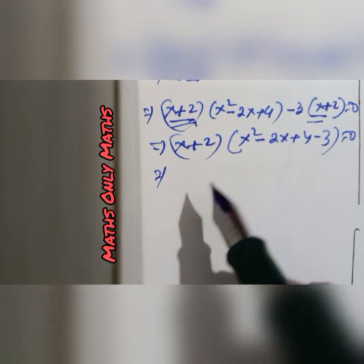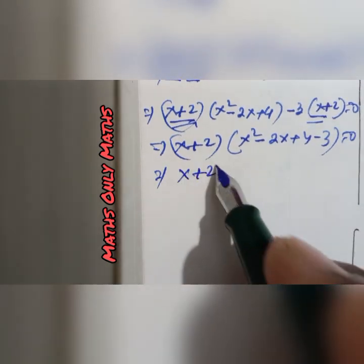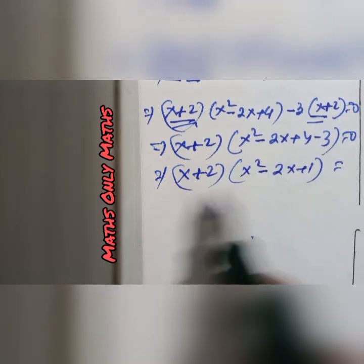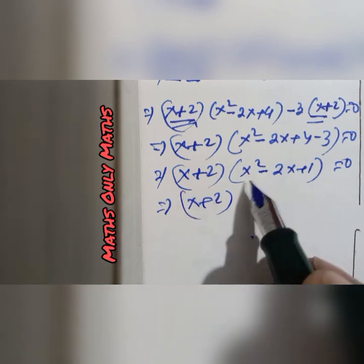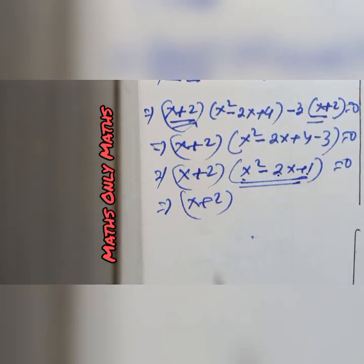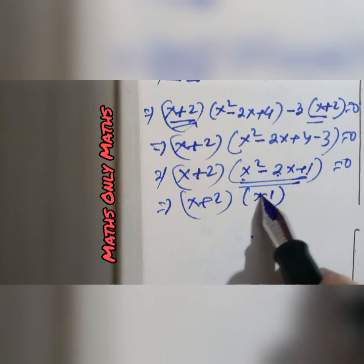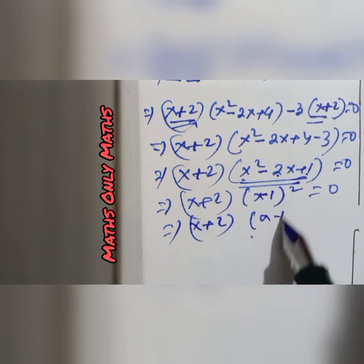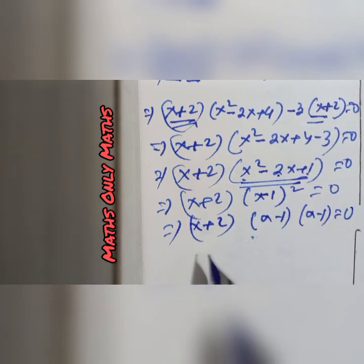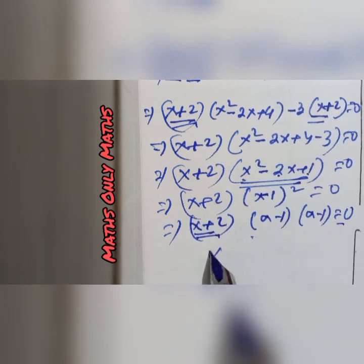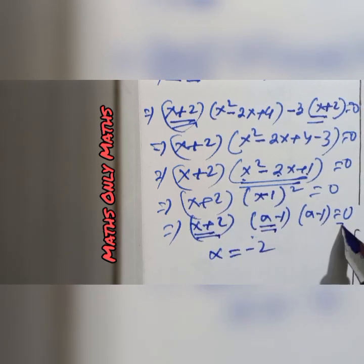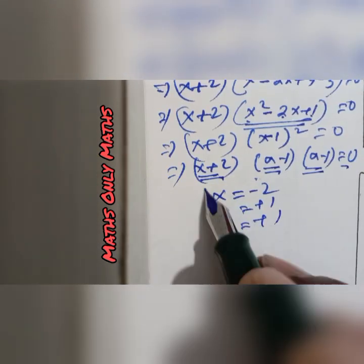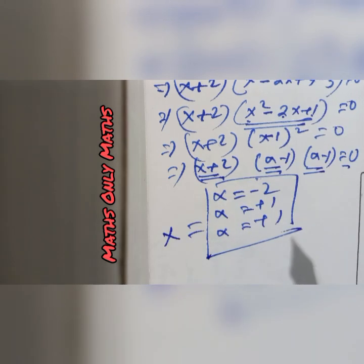So I get x plus 2 multiply x square minus 2x plus 1 equals to 0, which is x plus 2 into x minus 1 whole square equals to 0. So either x plus 2 equals to 0, giving x equals to minus 2, or x minus 1 equals to 0, giving x equals to plus 1. These are the solutions. Thank you very much.